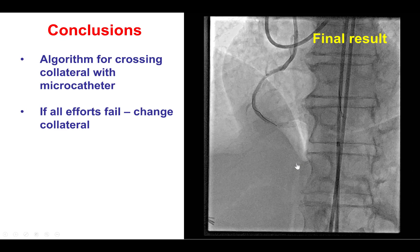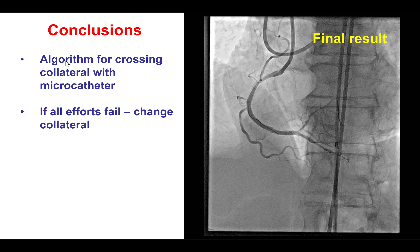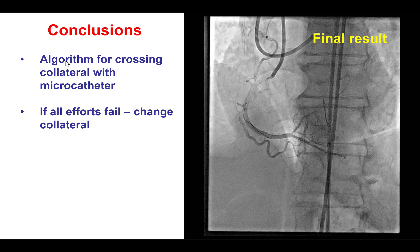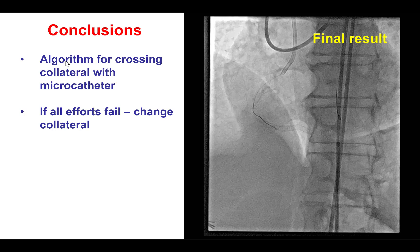A nice final result was achieved in the right coronary. In summary, there is an algorithm for crossing a collateral with a microcatheter if the originally selected microcatheter does not advance. The options are: use more support such as a guide extension on the retrograde guide; use different microcatheters — small profile, torqueable and non-torqueable; and try to modify the collateral, for example by gentle dilation with a 1.0 mm balloon.